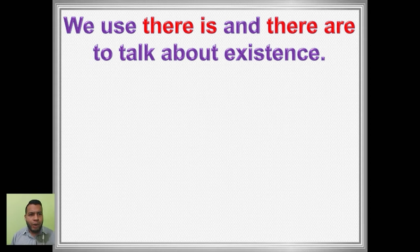We use there is and there are to talk about existence. Utilizamos there is y there are para hablar de existencia, para decir que algo existe. En español lo traducimos como hay. But what is the difference?